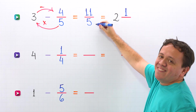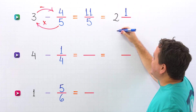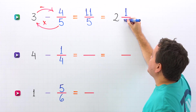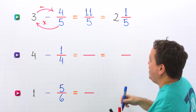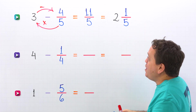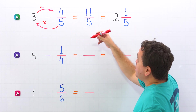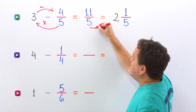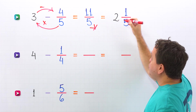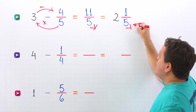And then the denominator stays the same — 5 comes over here. Therefore, 3 minus 4 fifths equals 11 fifths, or 2 and 1 fifth.